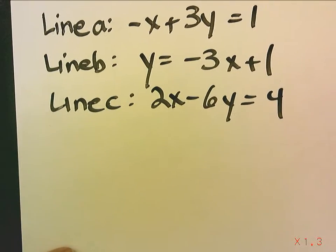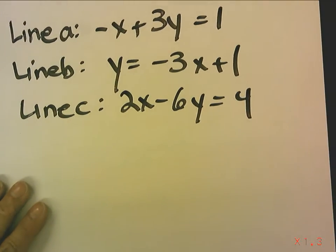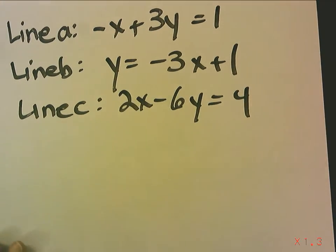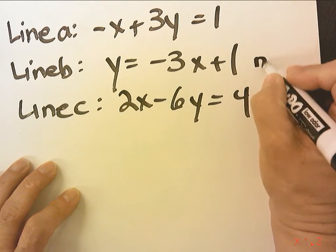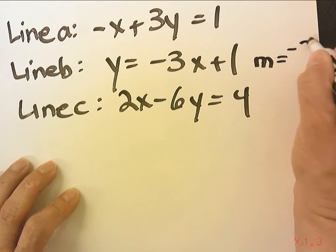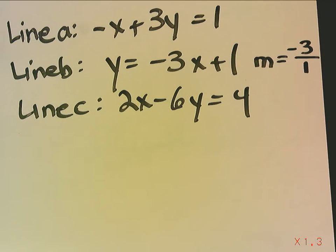Okay, so now, the first thing we're going to do to determine if these lines are parallel or perpendicular when graphed is to find the slope of each line. Now, to find the slope of each line, it's easiest if we put it in slope-intercept form. Only one of these is in slope-intercept form, and that's line B. So it's very easy for us to identify the slope of line B.